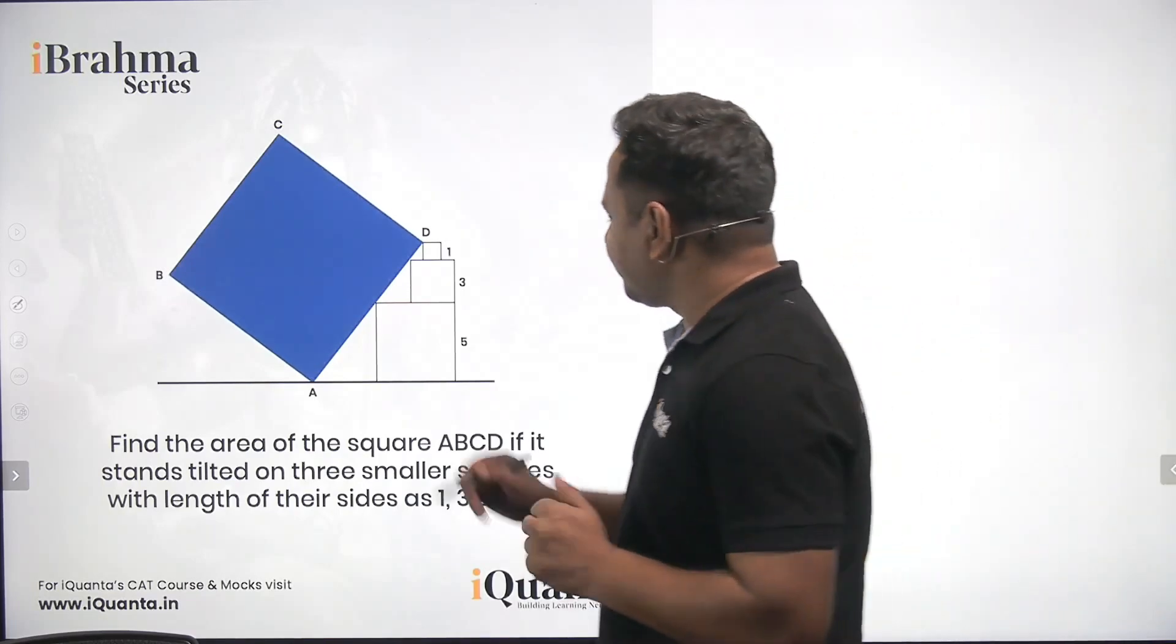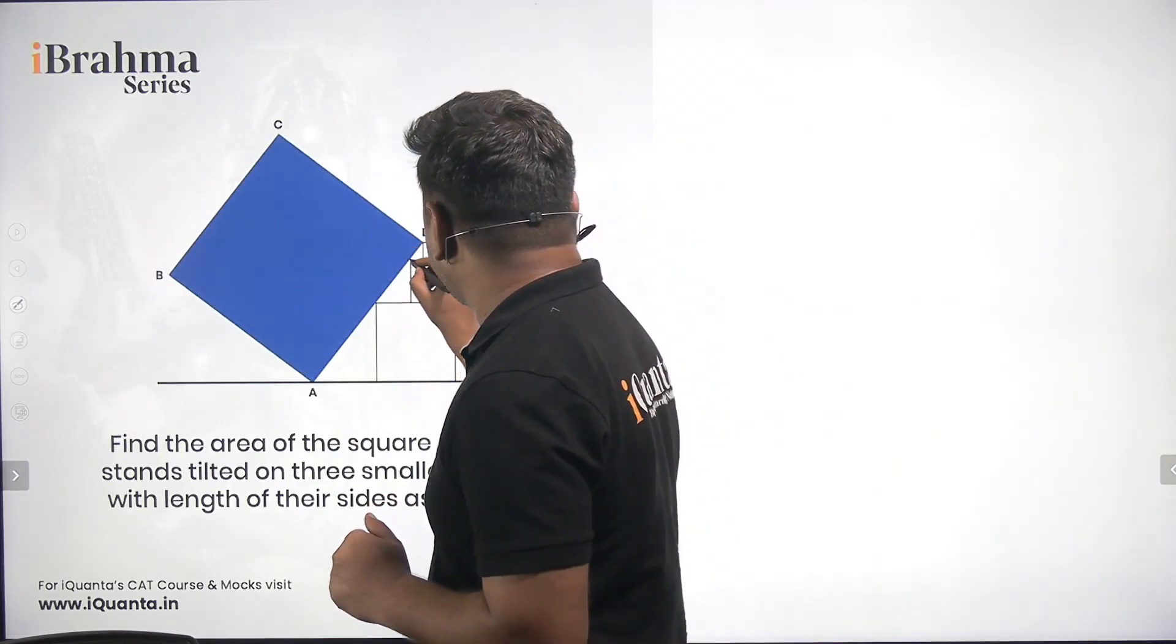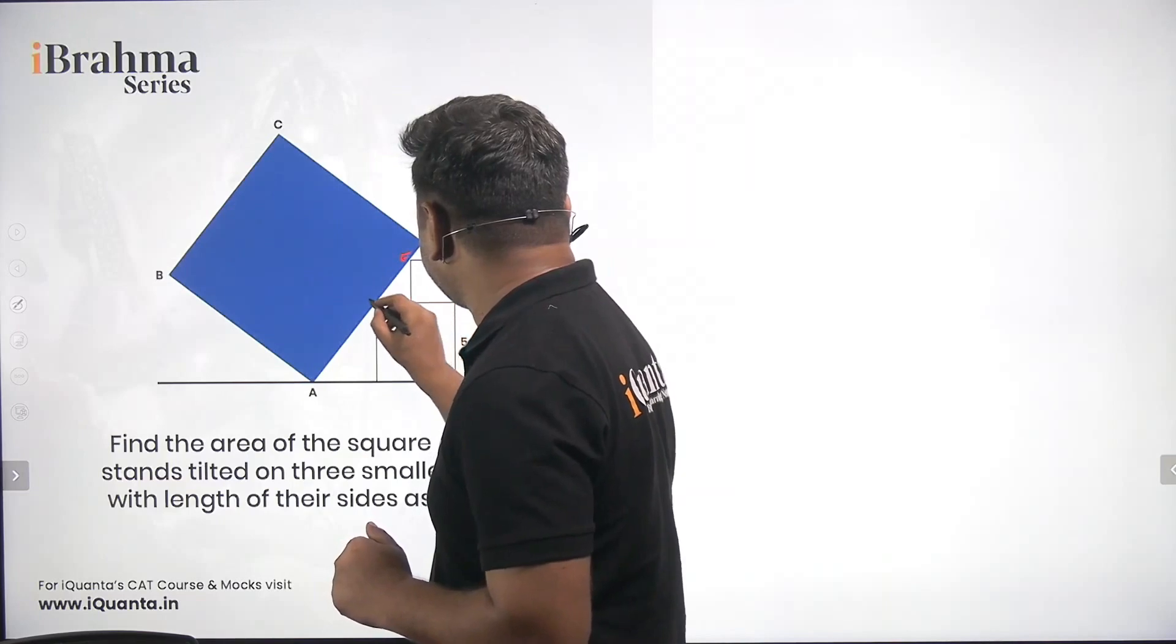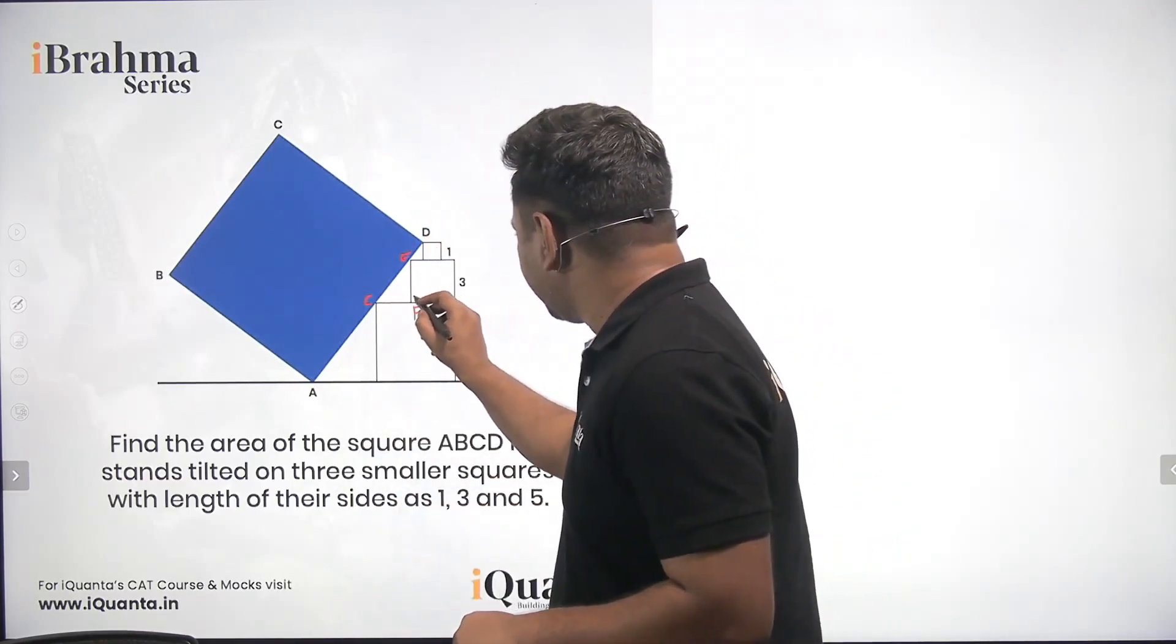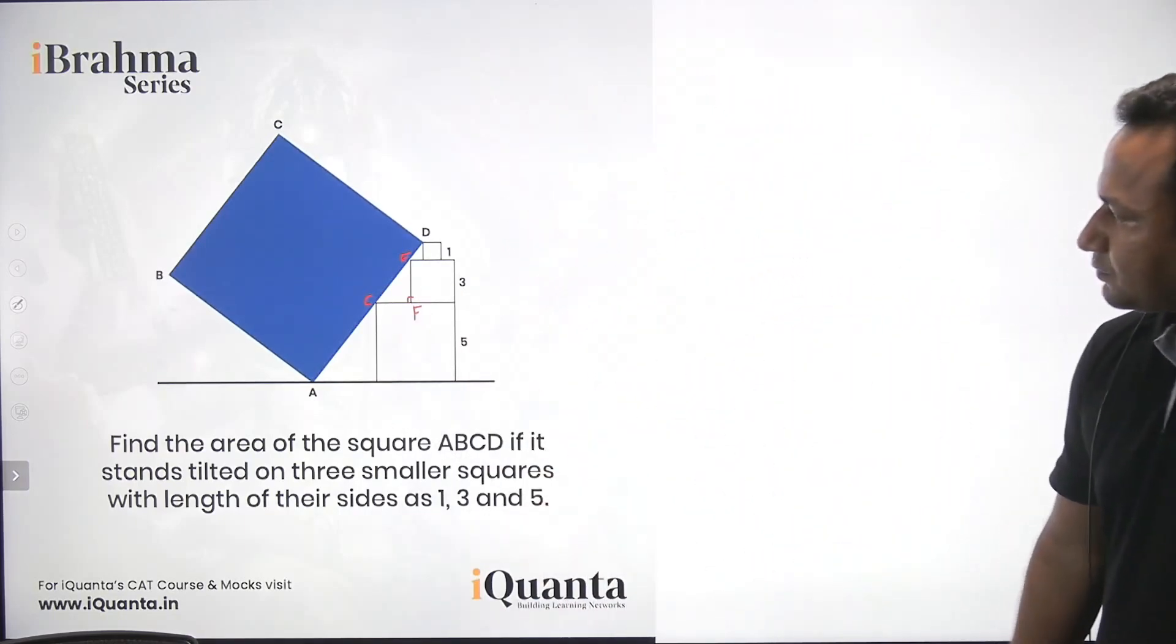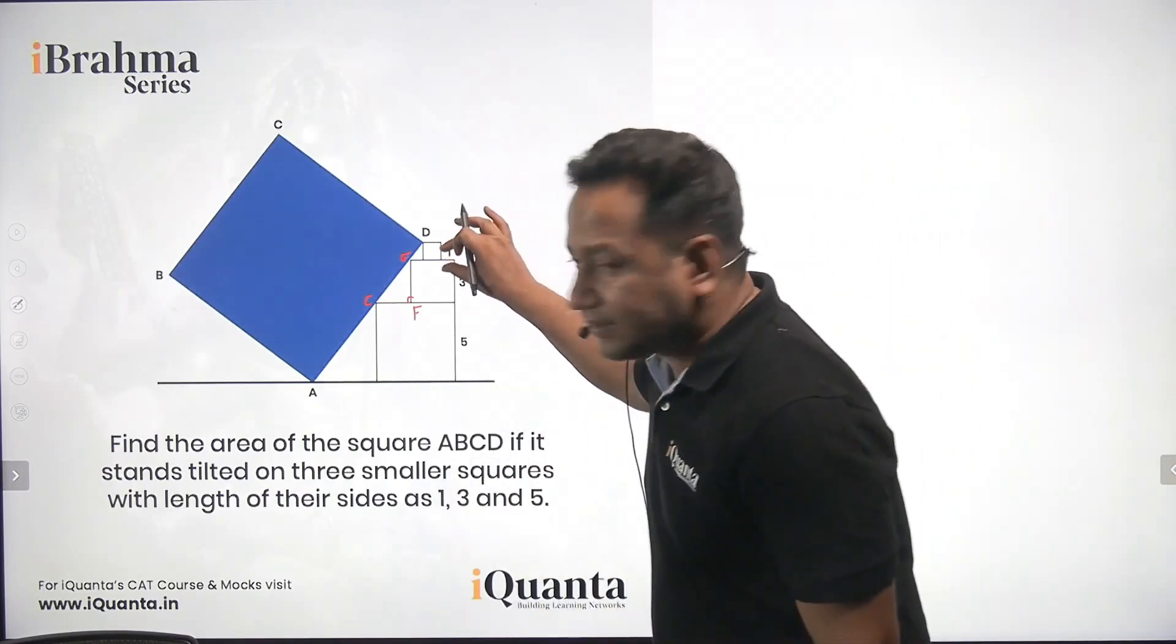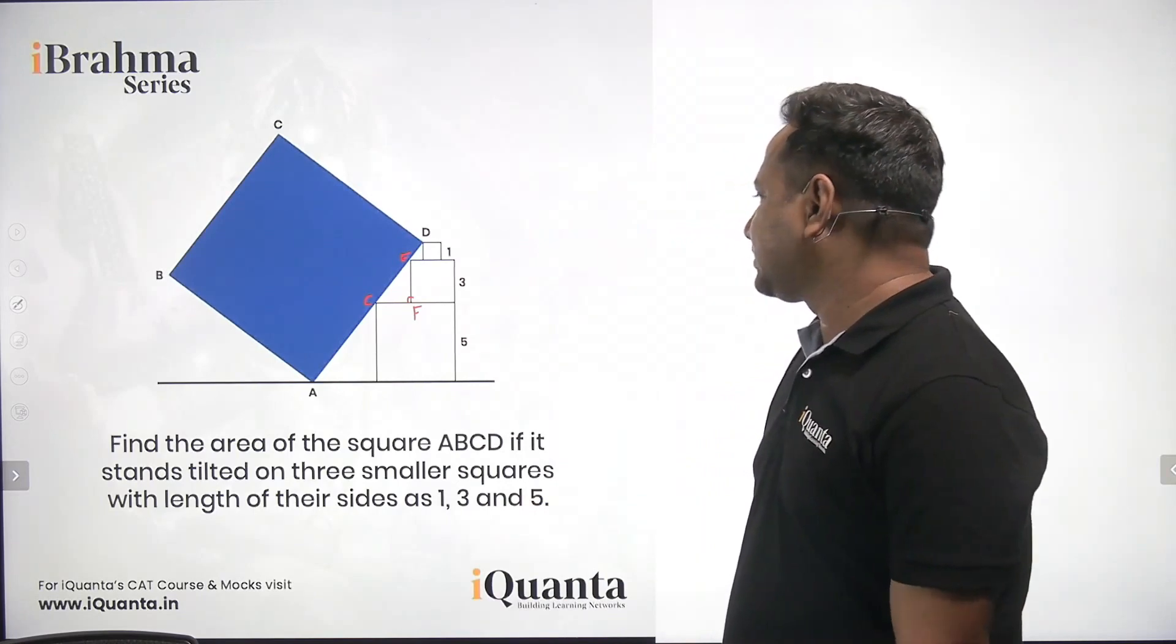Before solving we will mark certain points. ABCD is the square. Let us mark this point to be E, this point to be F and this point to be G. So now we have a right angle triangle EFG. Now, this one is 1 unit of length, then we have 3 units of length, then we have 5 units of length.